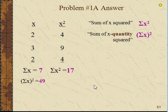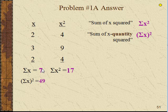Okay, so you should have gotten Σx as being 7—that's 2 plus 3 plus 2 equals 7—and then if I square that, I get (Σx)² equals 49.